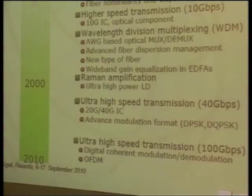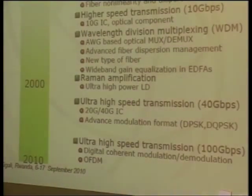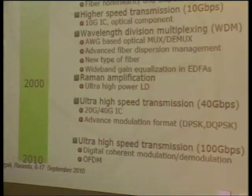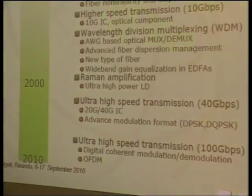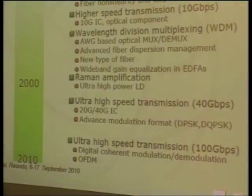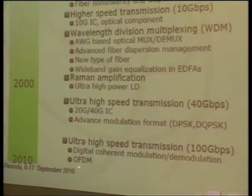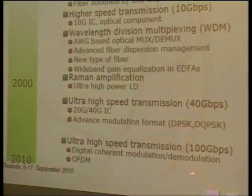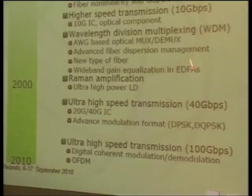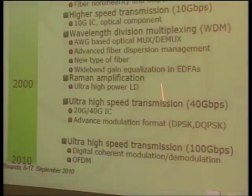100G per channel is not so popular in commercial use, but in laboratories intensive research has been made. The key technology is digital coherent modulation and demodulation — coherent technology revived here. OFDM technology may also be one of the key approaches.